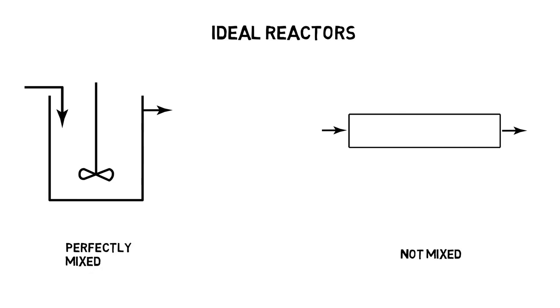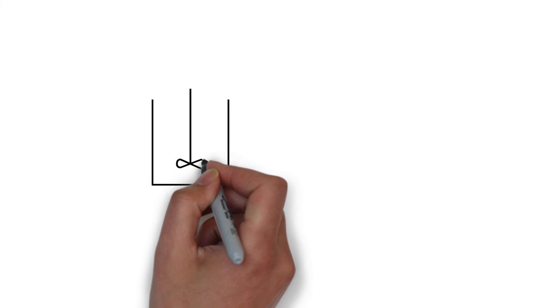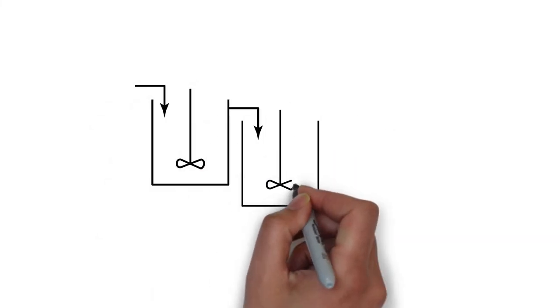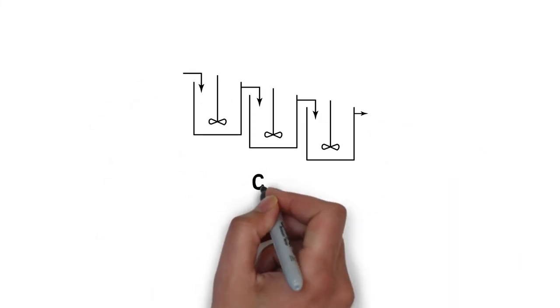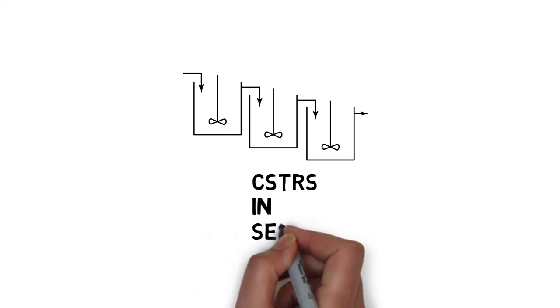Sometimes a plug flow reactor cannot be used in industry due to technical constraints. In this case, similar conditions can be achieved by connecting several CSTRs in series so that the exit stream of one reactor is the feed stream of the next reactor.